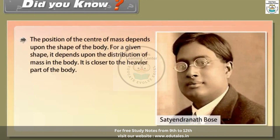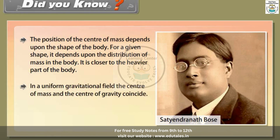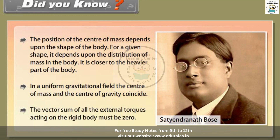The position of the center of mass depends upon the shape of the body. For a given shape, it depends upon the distribution of mass in the body and is closer to the heavier part. In a uniform gravitational field, the center of mass and the center of gravity coincide. The vector sum of all the external torques acting on a rigid body must be zero for equilibrium.